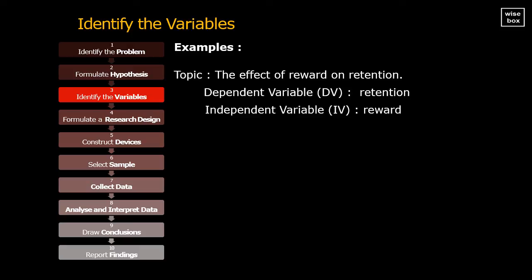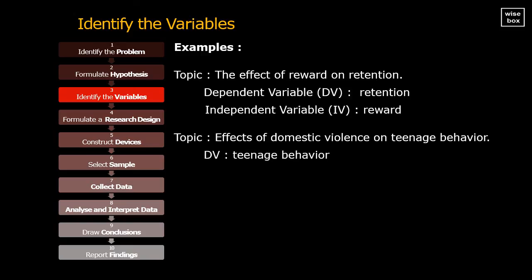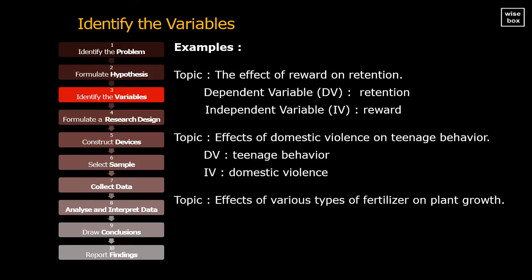Another example. From the research topic, effects of domestic violence on teenage behavior: The dependent variable is teenage behavior. And the independent variable is domestic violence. Then for the scientific research topic, effects of various types of fertilizer on plant growth: The dependent variable is plant growth. The independent variable is types of fertilizer.